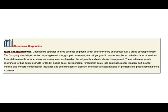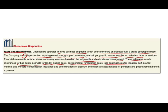For example, Chesapeake Corporation operates in three business segments offering a diversity of products over a broad geographical base. The company is not dependent on a single customer, group of customers, market, geographical area, or supplier — which is good. Their financial statements include amounts based on the judgment and estimates of management, including allowance for bad debt, accrual for landfill closing costs, environmental remediation, and loss contingencies for litigation, as well as discount and other assumptions based on pension and post-retirement expense.